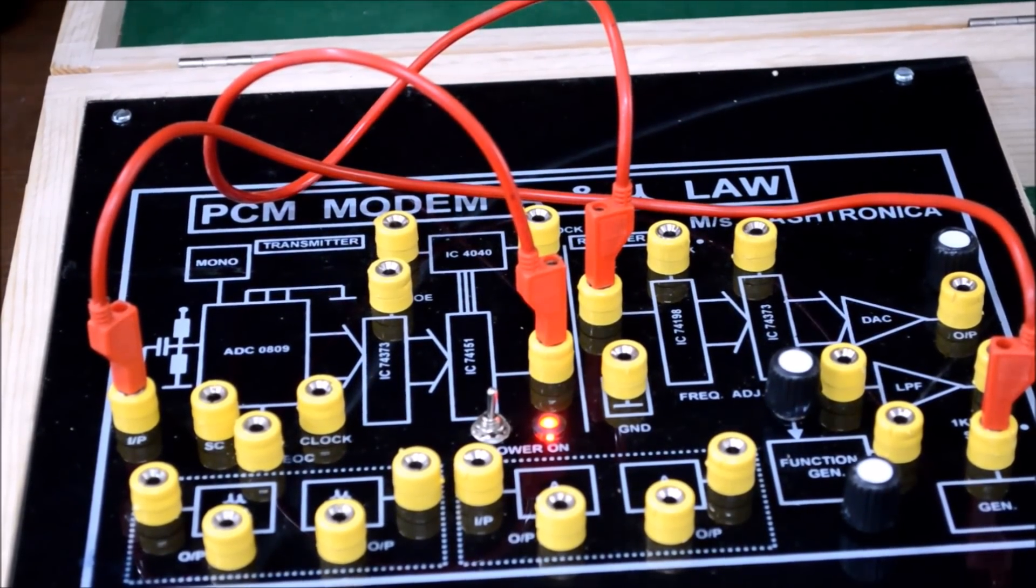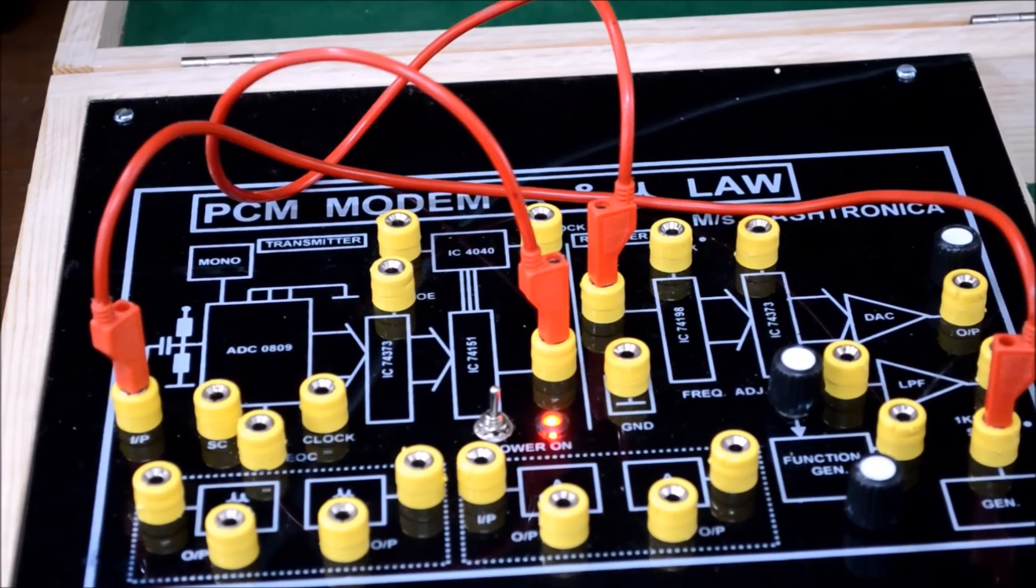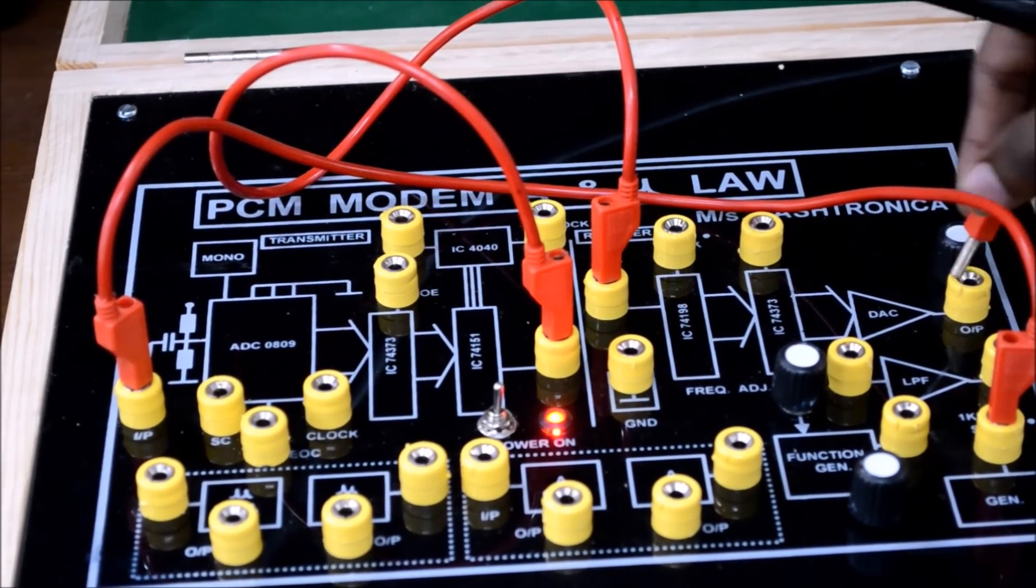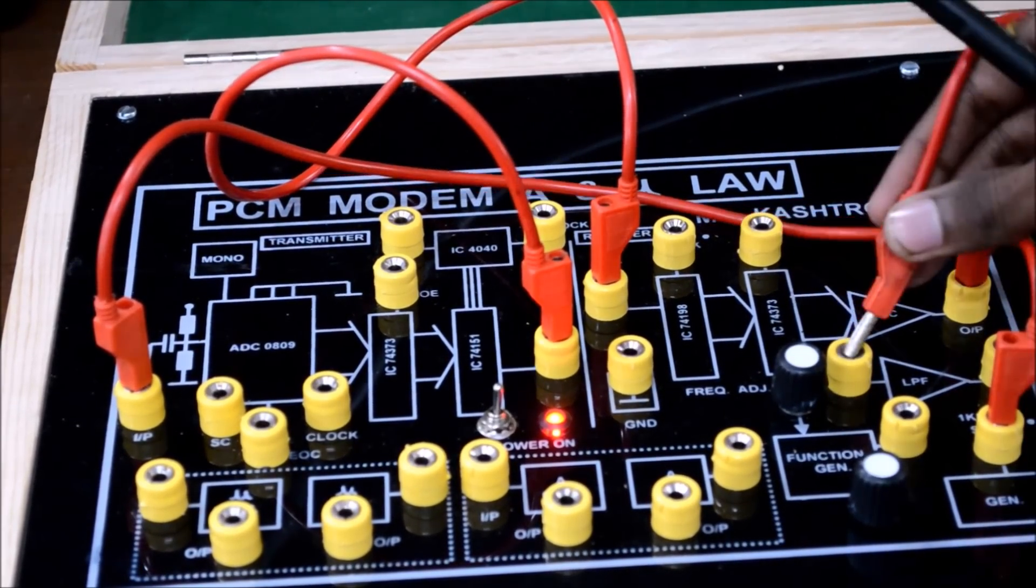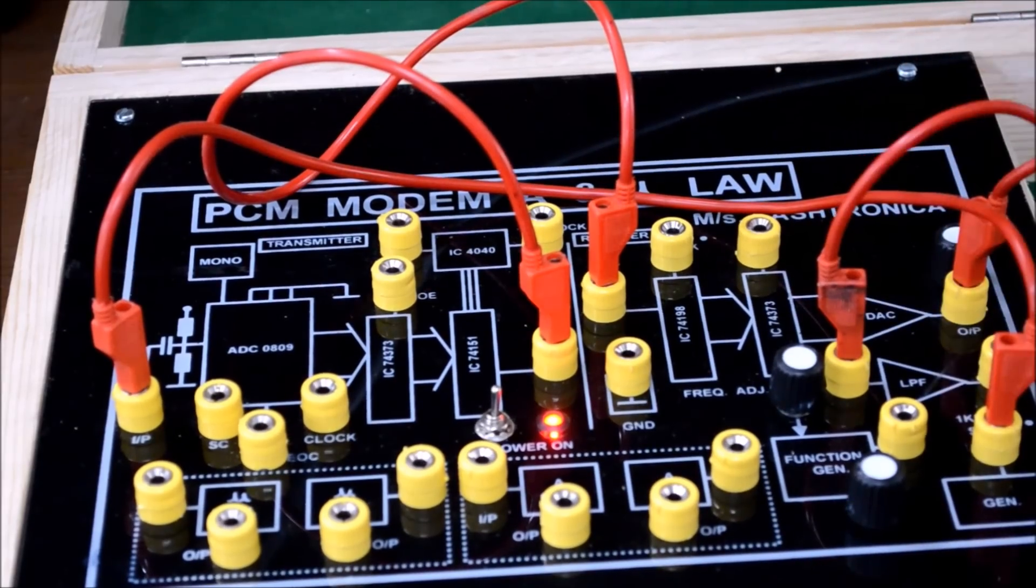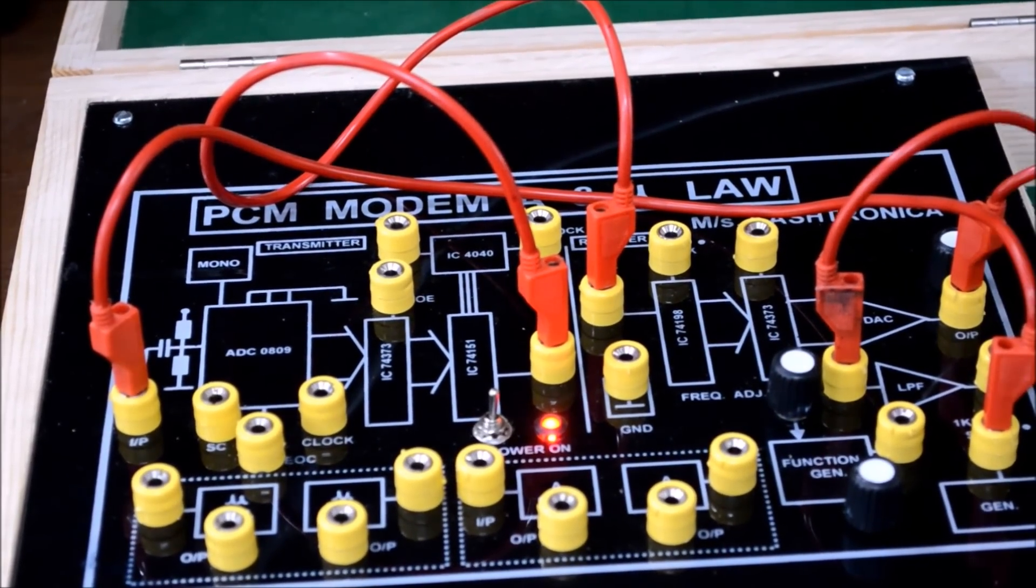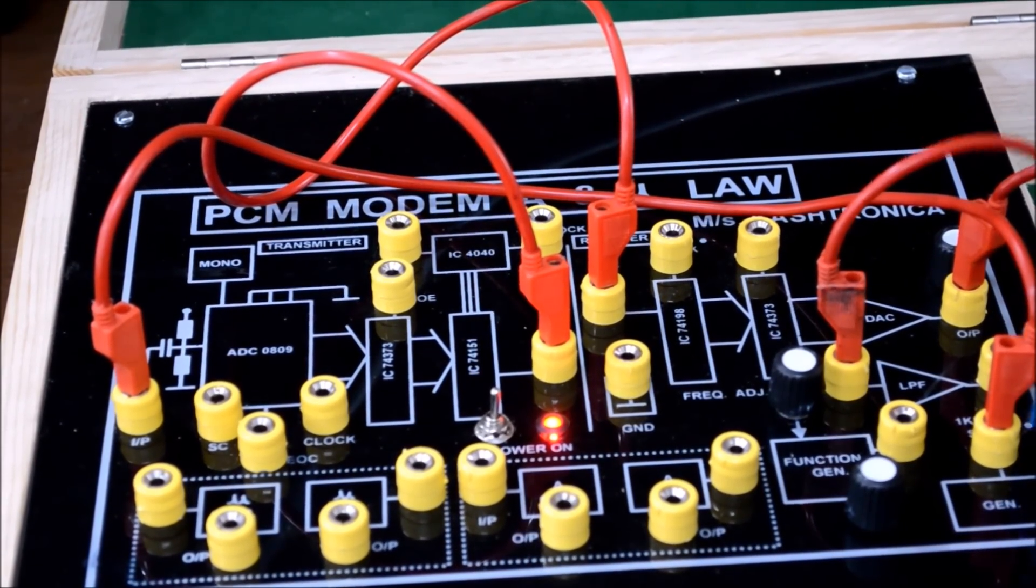This is the DAC output and this is the low pass filter port. Now, you need to observe the signal obtained from the low pass filter and compare it with the original signal.